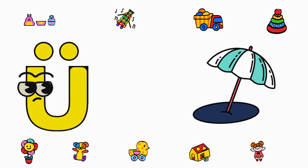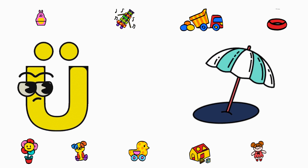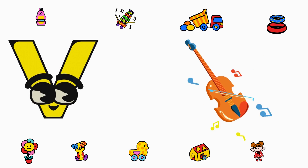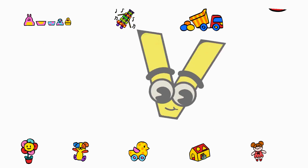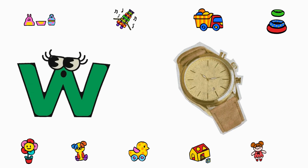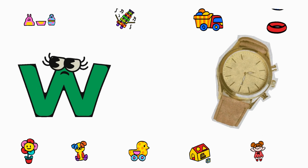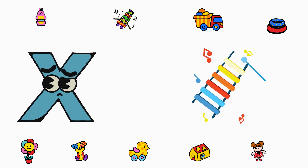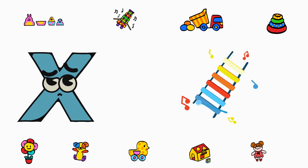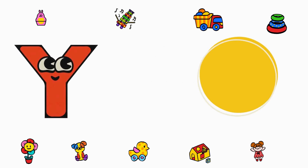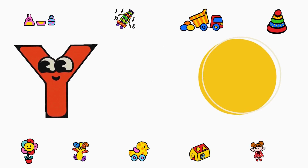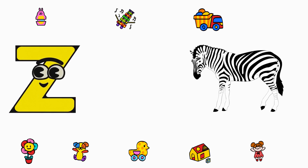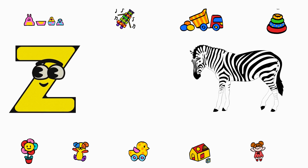U is for Umbrella. V is for Violet. W is for Watch. X is for Xylophone. Y is for Yellow. Z is for Zebra.